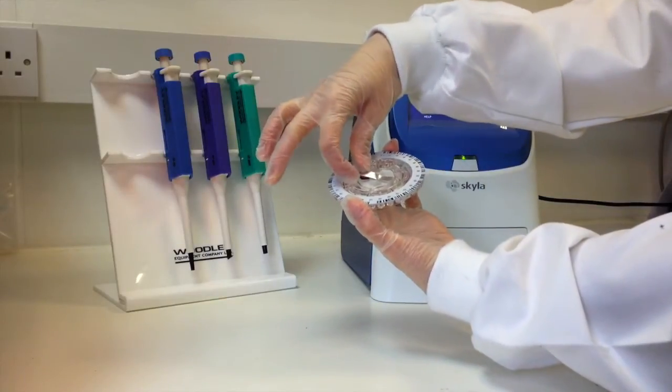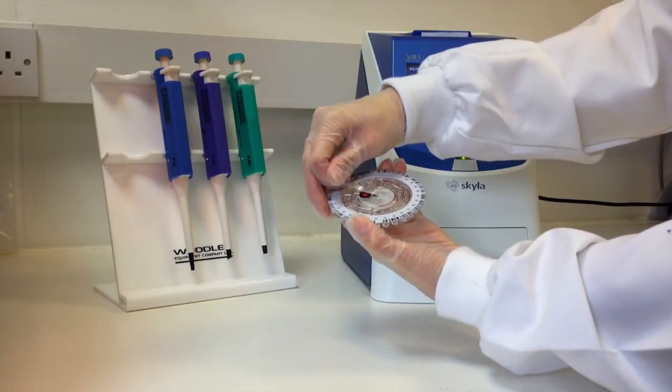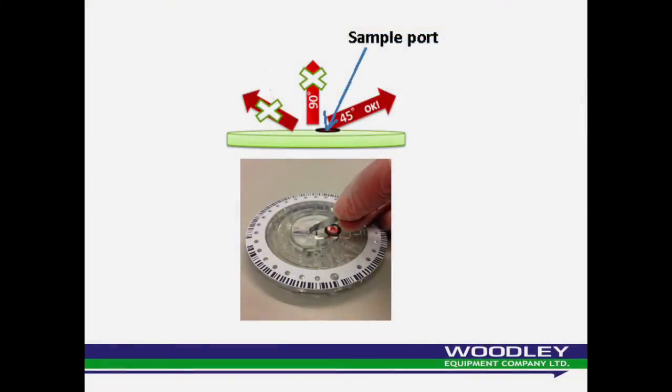Holding the rotor by the edge, gently pull the end of the aluminum strip in an outward direction along the surface of the rotor. Do not pull the aluminum strip back on itself or vertically.